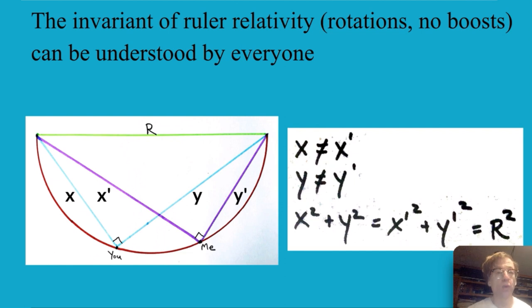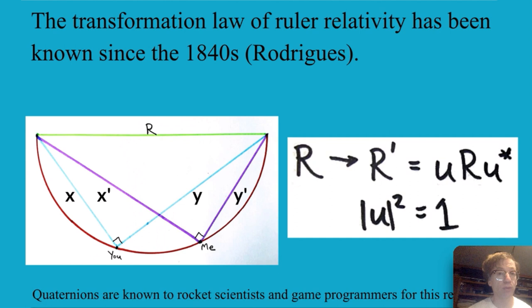Well what else do we need? We need our transformation law and that was figured out in the 1840s by this guy named Rodriguez and he said if you pre and post multiply by a unit quaternion and you got to throw in a conjugate there then you will be able to move along that kind of semicircle there and get to a new position where the squares will work out.